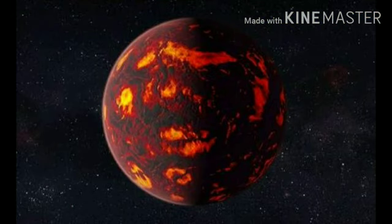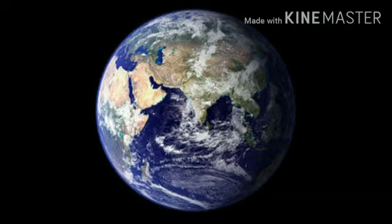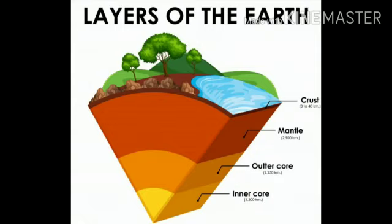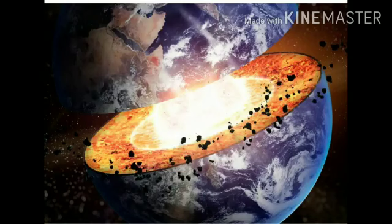The scientists believe that the earth was formed out of the solar system itself. Initially, earth was a gaseous hot balloon. It cooled down as it rotated around itself. The process of cooling took place from the outer surface towards the earth's center. As a result, the outer layer — the crust — became cooler and solid, but as we move from the surface to the core, heat increases.